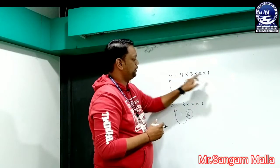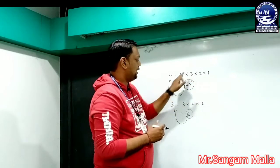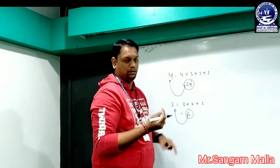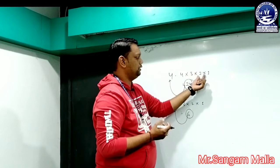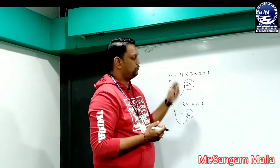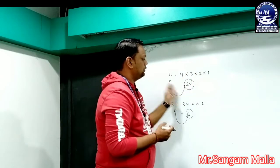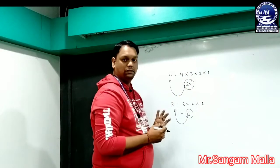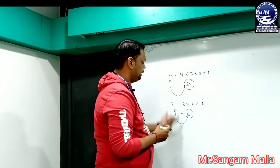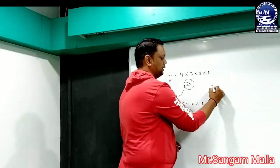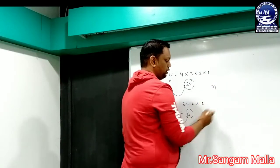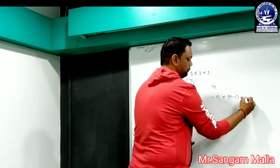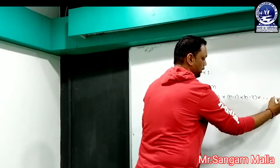From that number it will come to 1, and after every step the number will be decremented by 1. After 4, 3 will come; then after 3, 2 will come; and finally it will move up to 1. The multiplication of all these numbers will be the factorial of the specified number. So whenever we take a number n, the factorial of n means n into (n-1) into (n-2) and it continues up to 1.